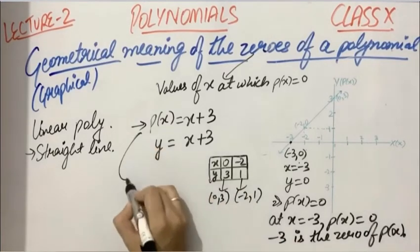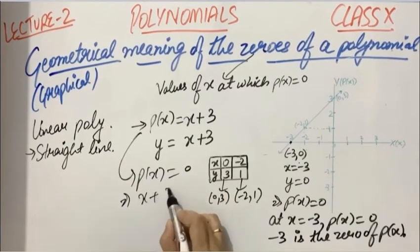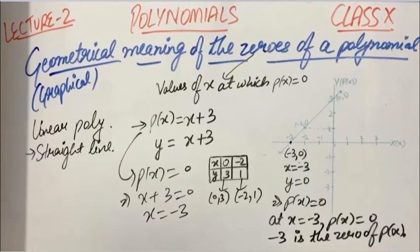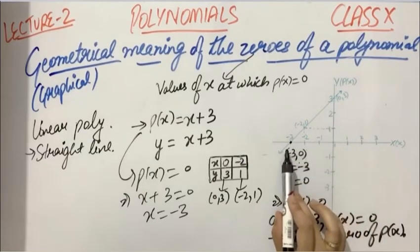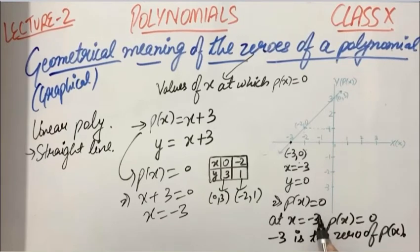Also, by algebraic method, P(x) = 0 implies x + 3 = 0, which gives x = -3. So -3 is the zero of polynomial P(x). Now you saw that the graph was intersecting at one point, so at that x-coordinate your polynomial is attaining the value 0.